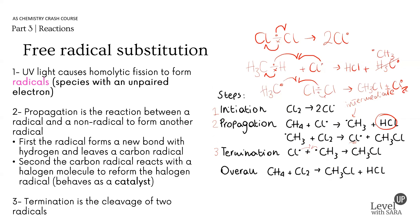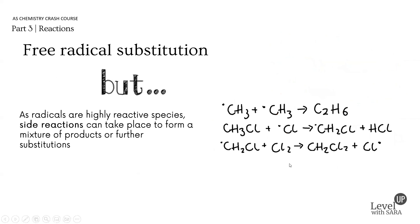Radicals are so reactive that they can react with anything present in the solution, so propagation and termination can occur simultaneously. The problem with this mechanism is that the radicals are highly reactive species, and side reactions take place to form a mixture of products or even further substitution. Some termination steps form an unwanted alkane — that's a side product.